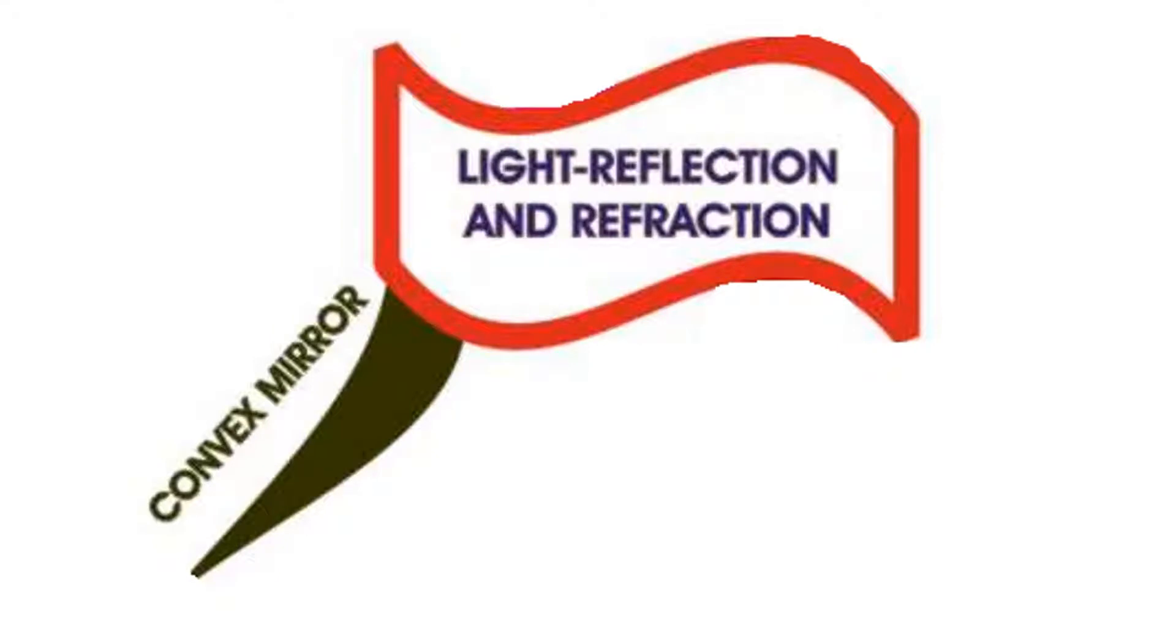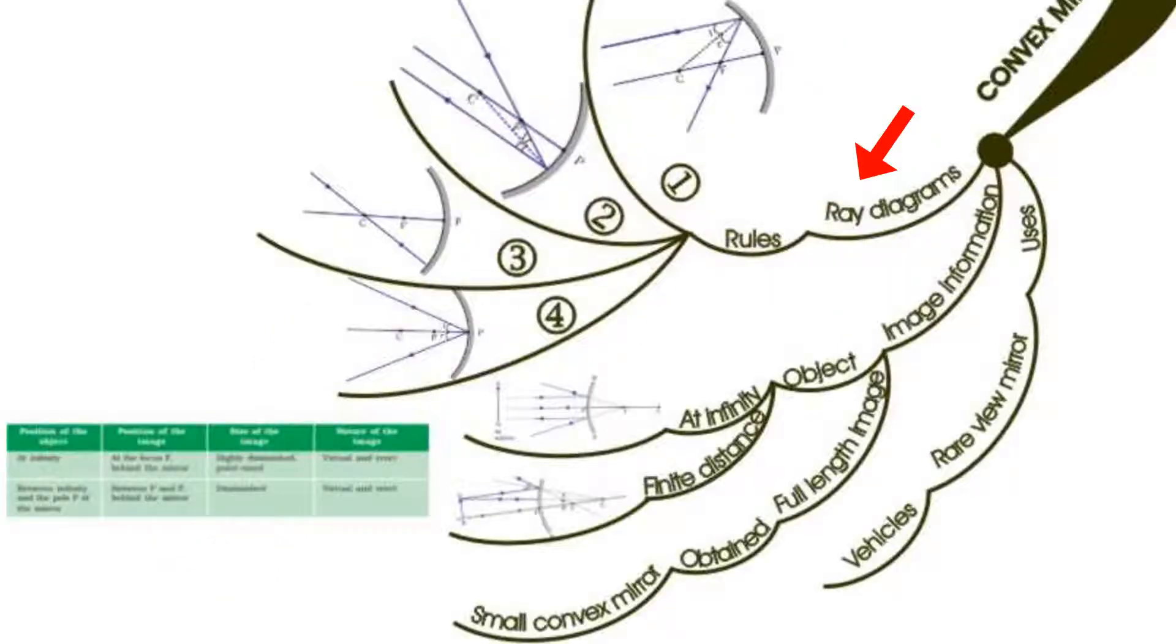Third branch: convex mirrors ray diagrams. When using convex mirrors, the same rules as concave mirrors must be followed while drawing ray diagrams. However, in concave mirrors the reflecting rays converge at a point, whereas in convex mirrors the reflective rays diverge from a point. You can see them in the corresponding figures of ray diagrams.